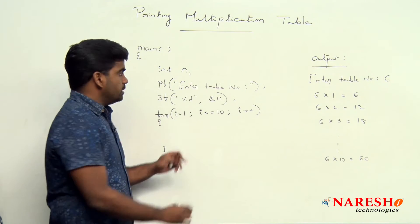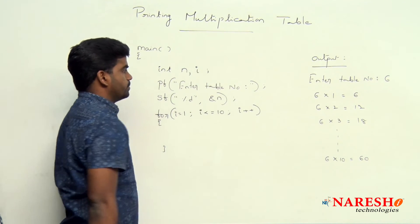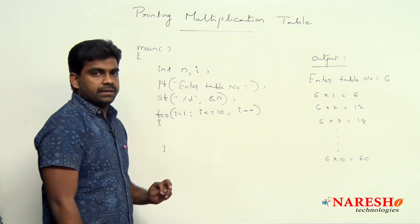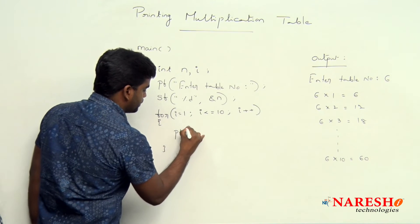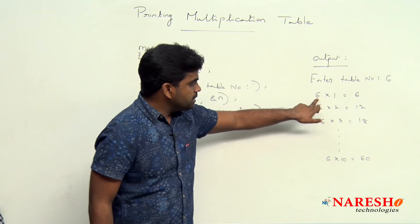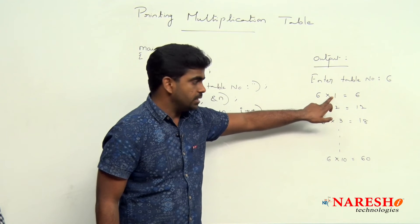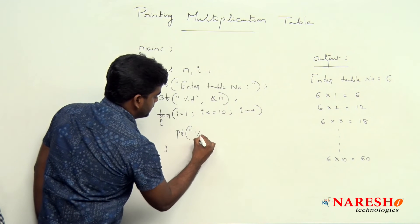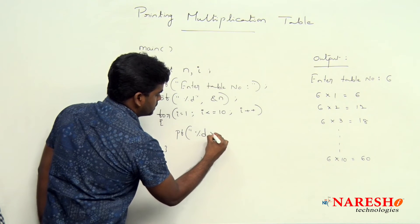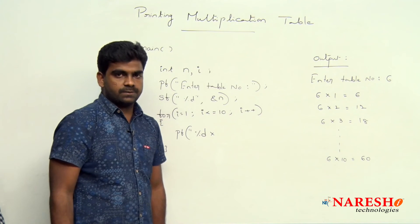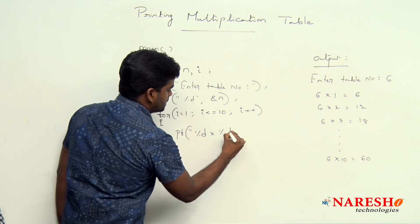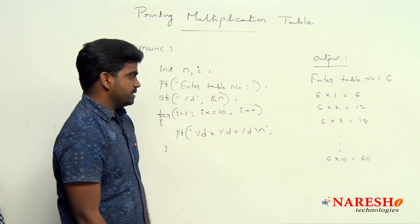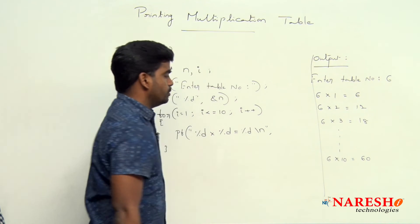Here we are using the variable i, so I am declaring that variable i. And here we are printing just printf. One integer value, next here it is a cross, next integer equal to integer. Percentage d, this cross means a small x or capital X you can write. Next followed by percentage d equal to percentage d. Next it will send the control to next line.